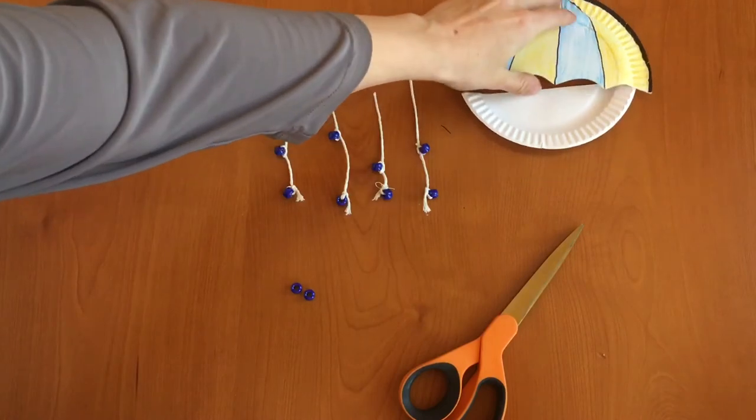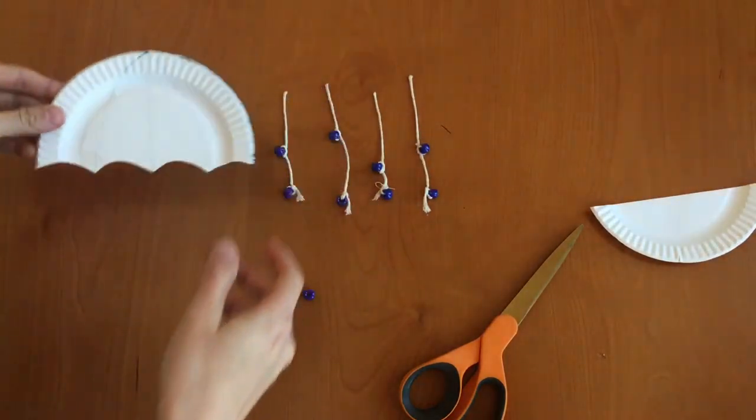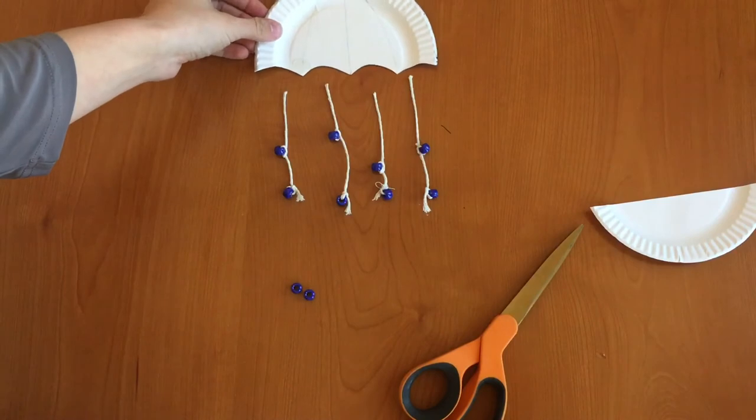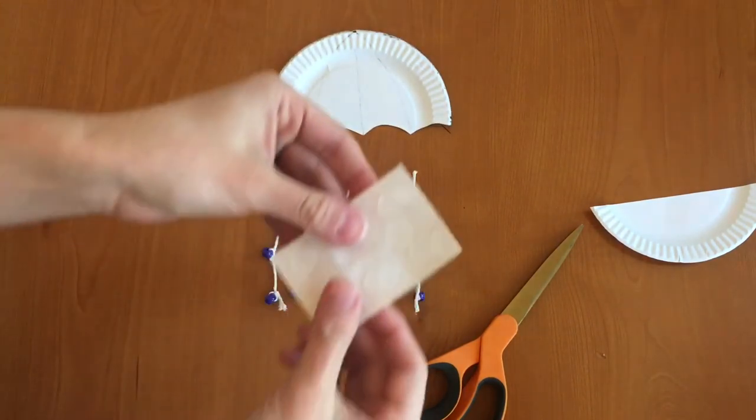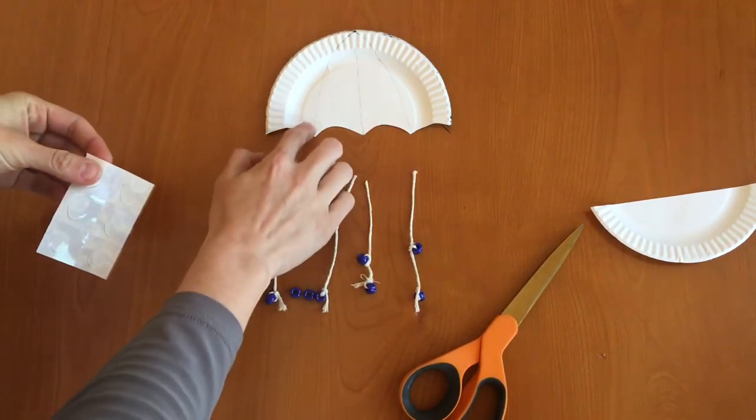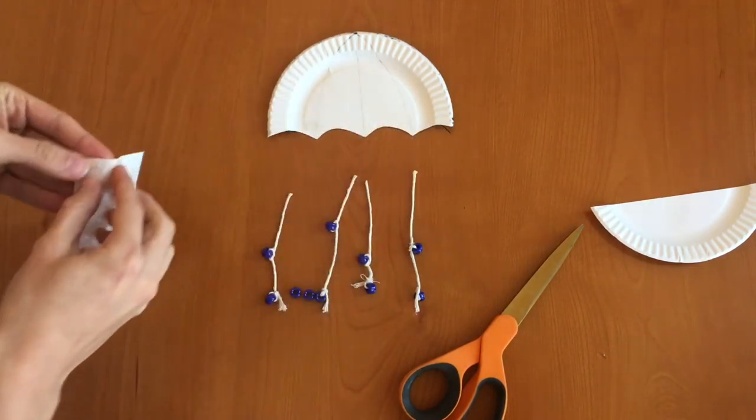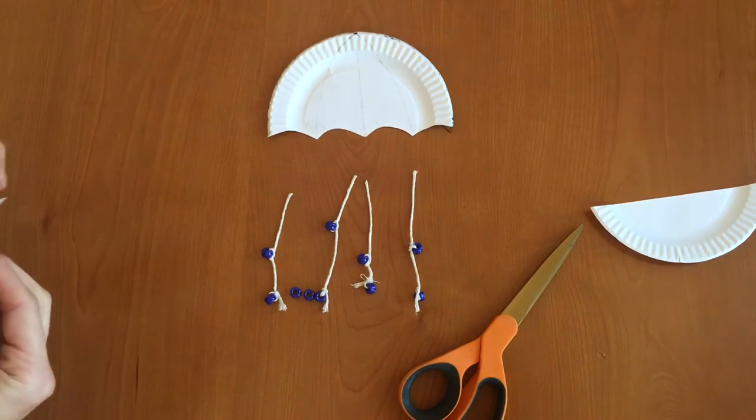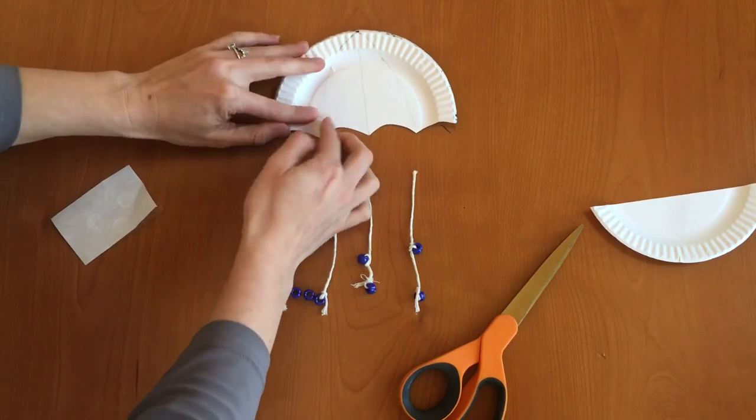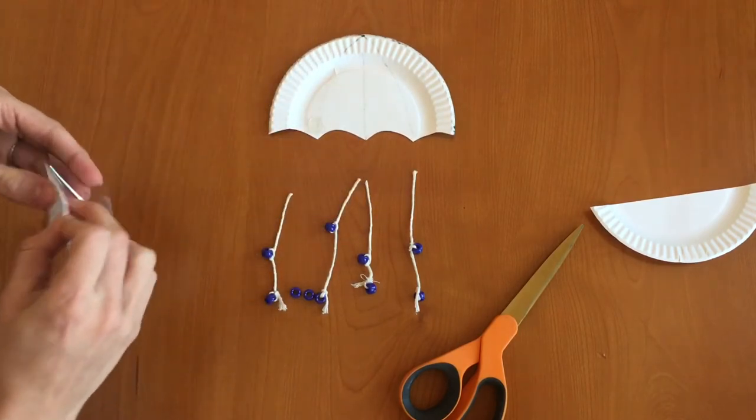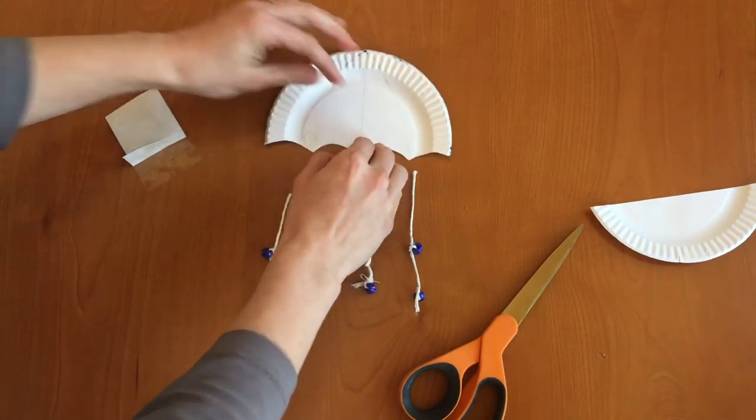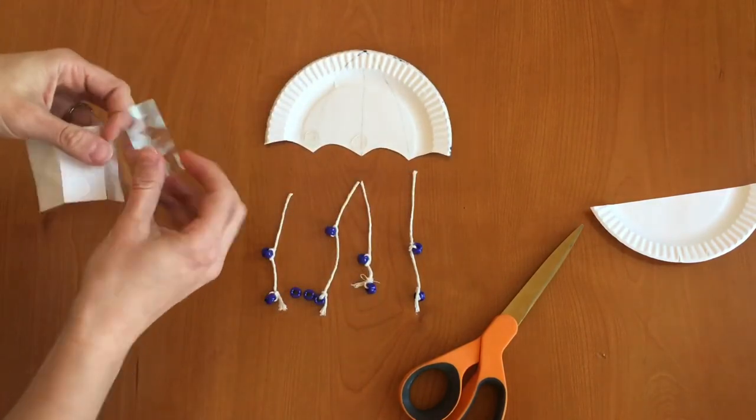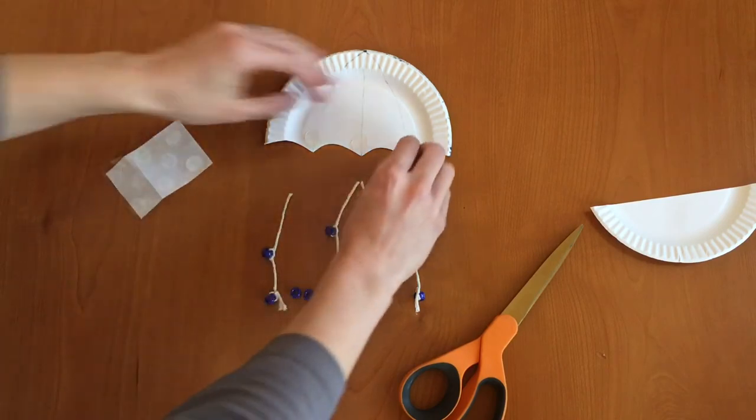Now I've got my four beaded strands and so what we're going to do next is take our umbrella, flip it over, and we're going to take our glue dots and we're going to put one glue dot at the end of each point. So I have three points so I'm going to do one, two, three.